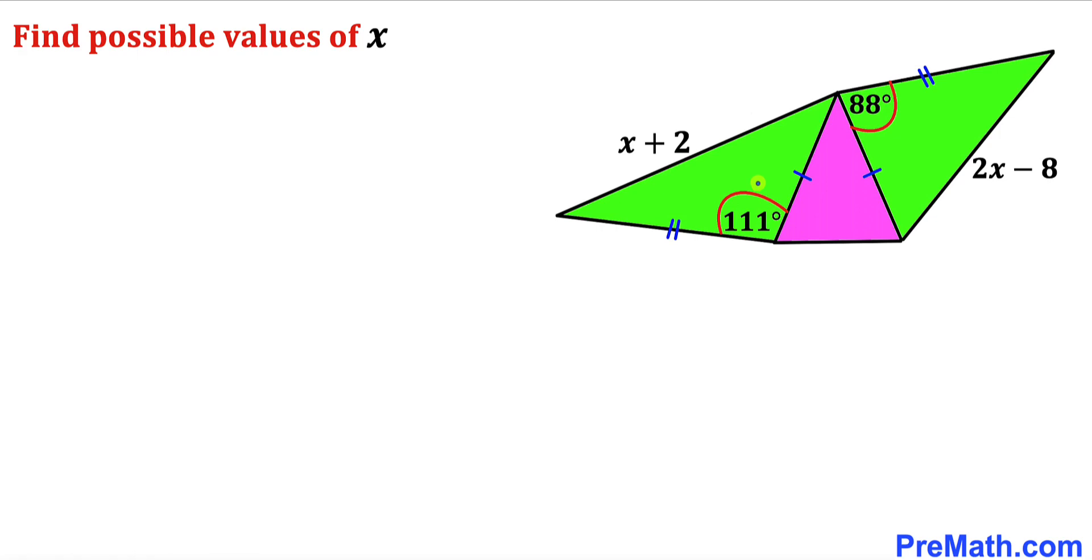Let's focus on these two angles of 111 degrees and 88 degrees. Now let's recall the angle-side relation theorem. In a triangle, the side opposite to the largest angle is the larger side.